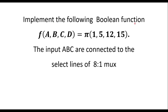Implement the following boolean function. The function is given as f(a, b, c, d) = π(1, 12, 15). These are nothing but max terms — the π symbol indicates these are the max terms. The inputs a, b, c are connected to the select lines of an 8-to-1 MUX. We are supposed to implement this function using an 8-to-1 MUX.